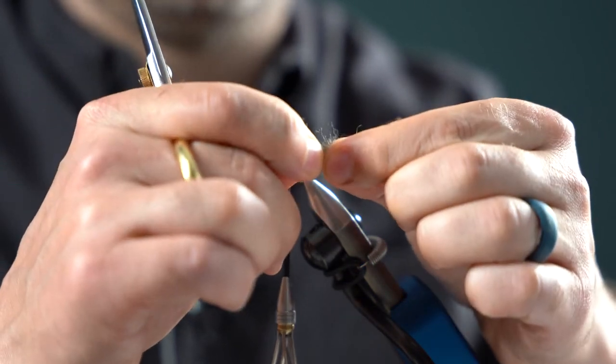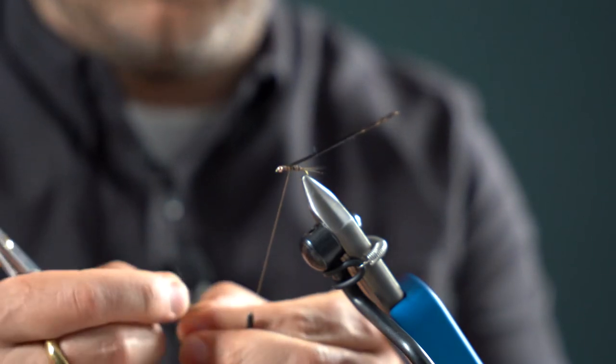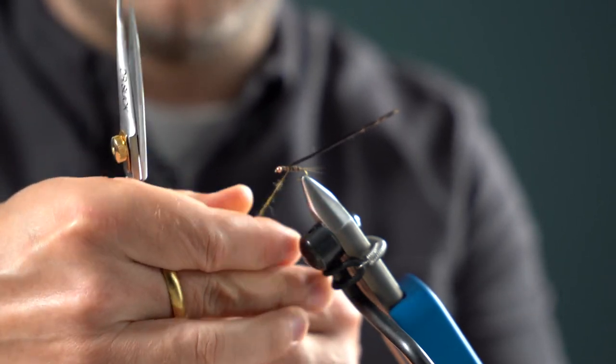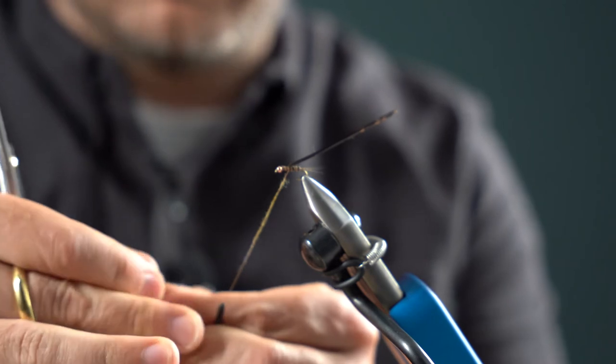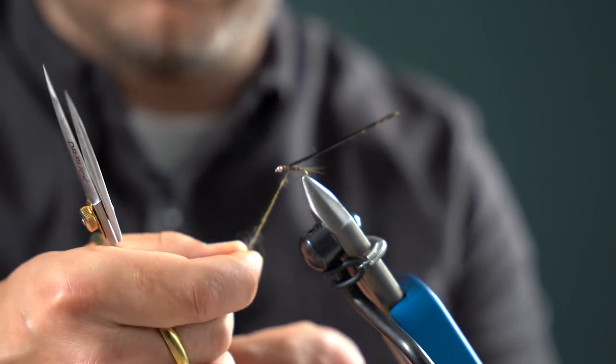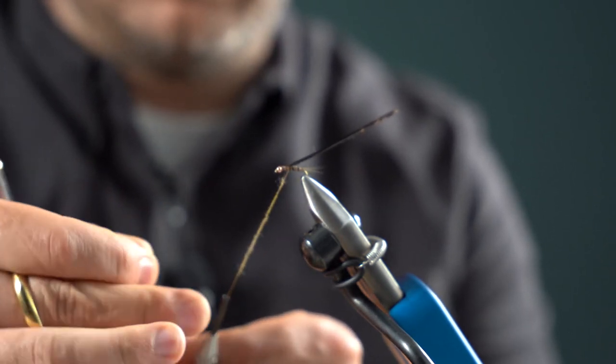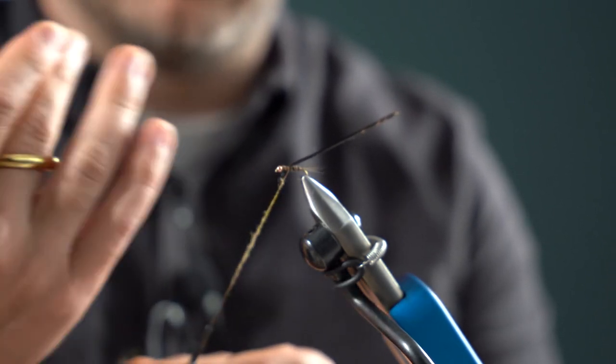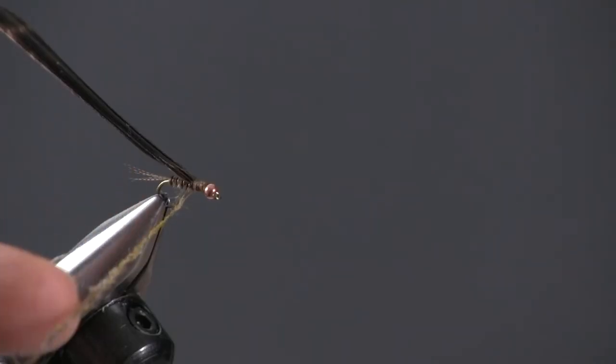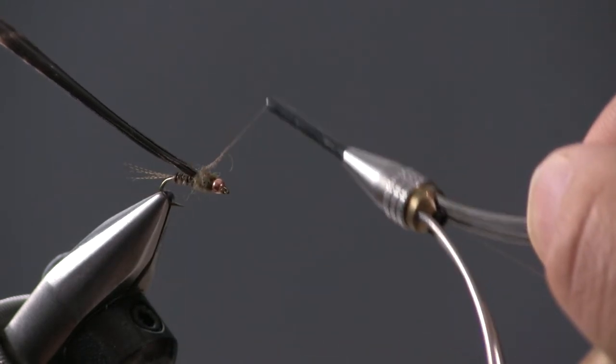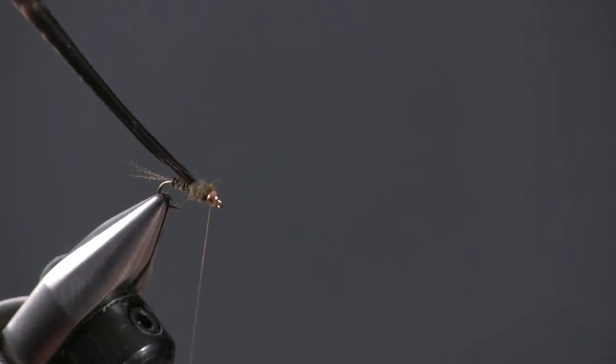And we're going to just dub this on real thin. Dubbing, it's really easy to overdub a fly. It's easy to put too much on. So when we're just beginning or tying flies, it's better to put too little on. And then if you need to add more later on, you can. I'm just going to dub real thin. And I'm putting it on the thread and twisting it in one direction, which helps those fibers just to envelop around the thread. So I've got about an inch and a half, two inch noodle of dubbing here. And I'm just going to dub this thorax. I just want it to be kind of a round little ball, just like that.